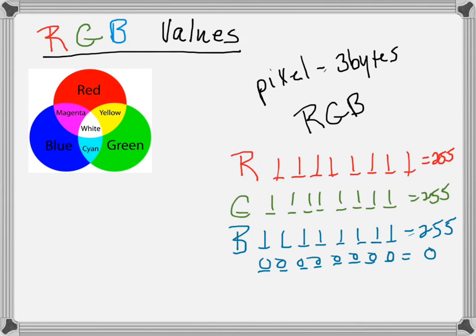If you turned the blue off, that would mean yellow — because you'd have full red, full green, and their intersection is yellow. So 255 red, 255 green, and zero blue gives you a yellow color. And of course we don't have to have zero or 255 — we can change this binary number to get different amounts of red, green, and blue mixed together to get any color on the entire spectrum.